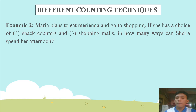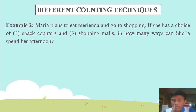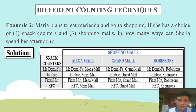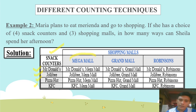Example number two: Maria plans to eat merienda and go shopping. If she has a choice of four snack counters and three shopping malls, in how many ways can she spend her afternoon? The four snack counters are McDonald's, Jollibee, Pizza Hut, and KFC. The three shopping malls are Mega Mall, Grand Mall, and Robinson's.